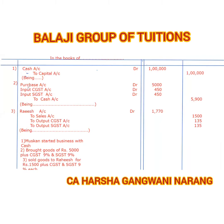Then she bought goods. She bought goods for 5,000 and she had to pay GST — 9% CGST and 9% SGST. So when she bought goods, she paid a total of 5,900. So cash went out of 5,900, which will be a credit.